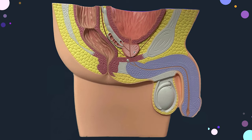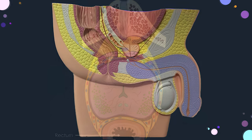Inferolaterally, the levator ani muscle is closely associated with the inferolateral surface of the prostate gland. The ejaculatory duct joins the prostatic urethra and is the continuation of the vas deferens. The vas deferens joins with the seminal vesicle to form two ejaculatory ducts, which pierce the posterior surface of the gland and join the prostatic urethra. Numerous prostatic ducts also open into the prostatic urethra.